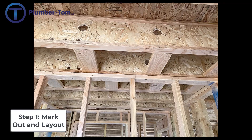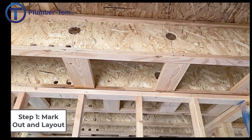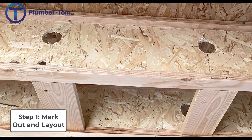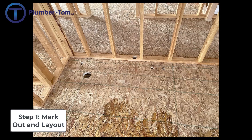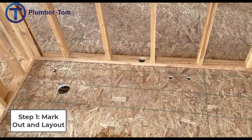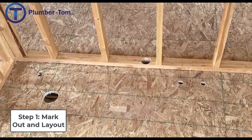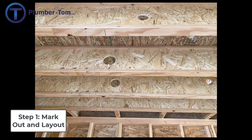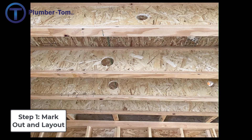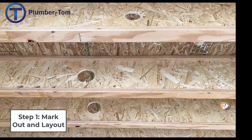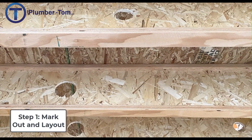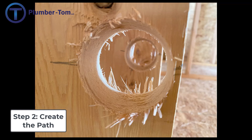Once everything is laid out and marked, we have to find the path for the pipe — marking out where the pipes will go to connect those fixtures. That includes marking out within the structure where pipes go in the studs or joists, and making sure we account for slopes as we bring those pipes through, adjusting elevations so the pipe will have proper slope.